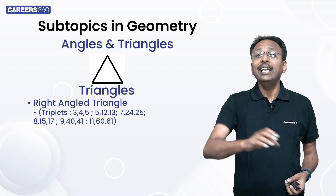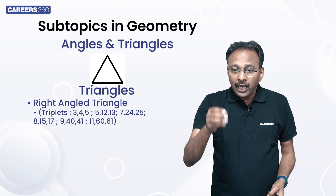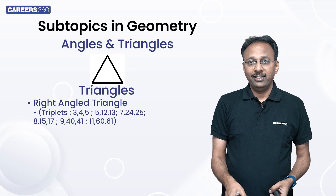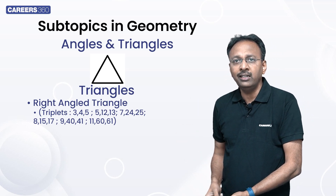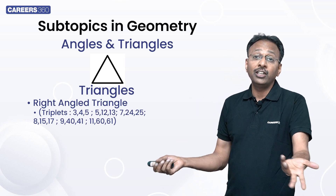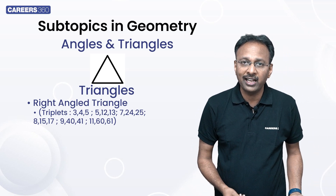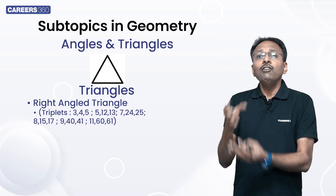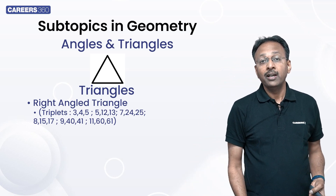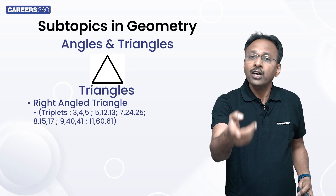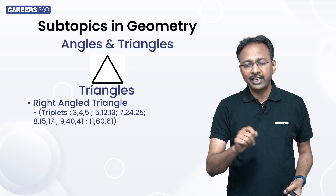Because if there is a CAT question and something is given as 61 — by visualizing, you know 61 is your hypotenuse — and they ask you the side of a triangle, you can answer it as either 11 or 60. Take these chances in your mocks. You will find it will be completely, completely correct.